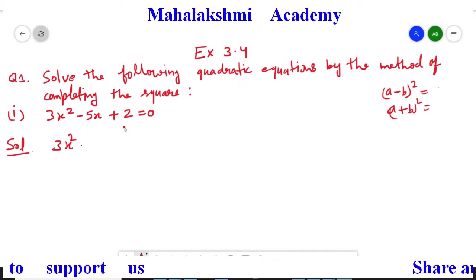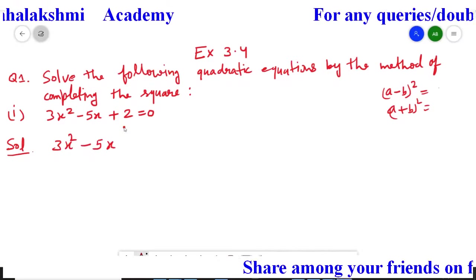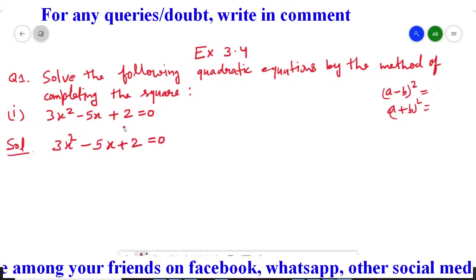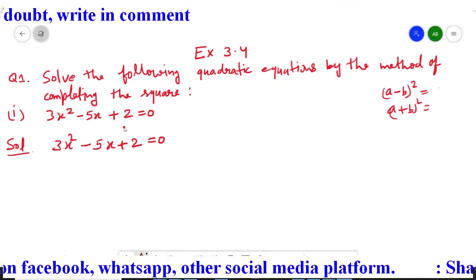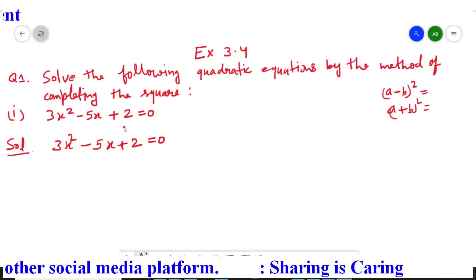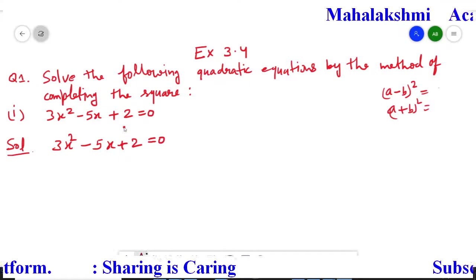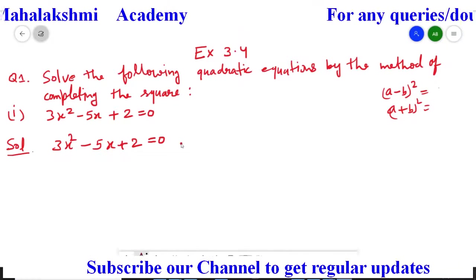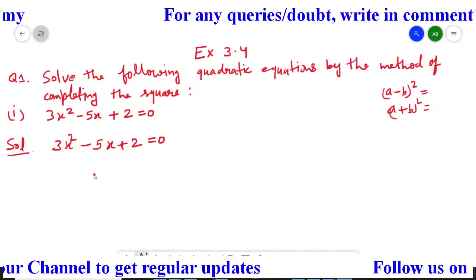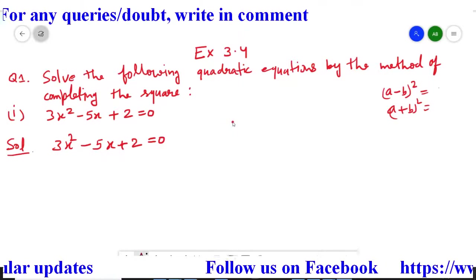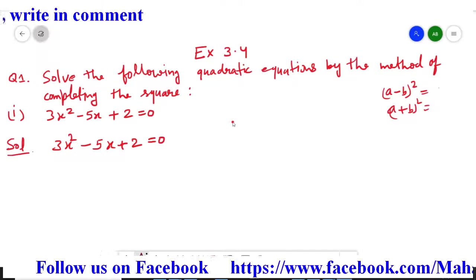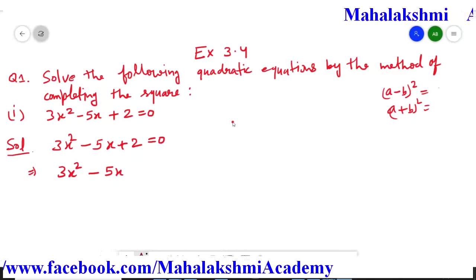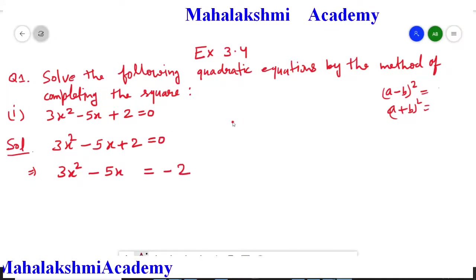The first step is to write the equation given in the question: 3x² - 5x + 2 = 0. Then keep only the variable terms in the left hand side and shift the constant to the right hand side. So the variable terms are 3x² and 5x, and +2 is shifted. We get 3x² - 5x = -2.